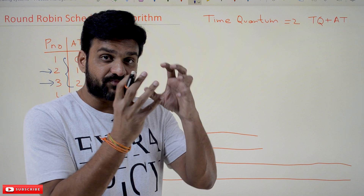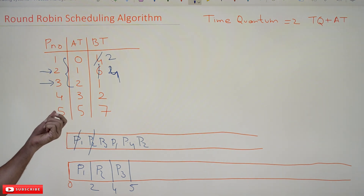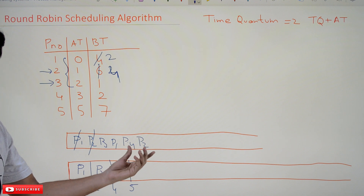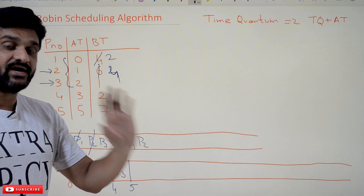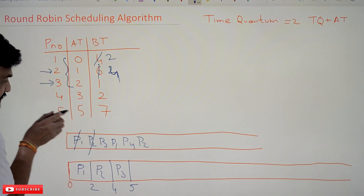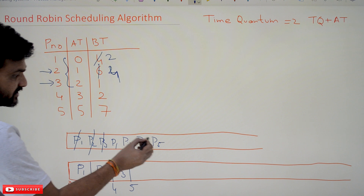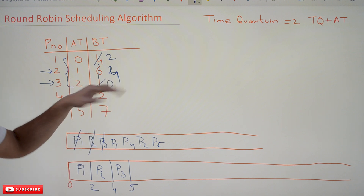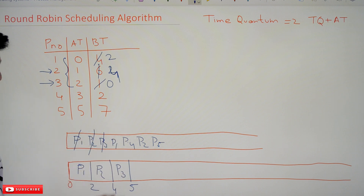This is a very important point: we must be careful about which processes have arrived at each point in time. At any given time, whatever processes have arrived must be added to the queue before we schedule. At t=5, process P5 has arrived and is in the queue. Since P3 has finished execution, it is permanently removed — there is no need to put it back in the queue. The order in the queue at this point matters greatly when solving these problems.